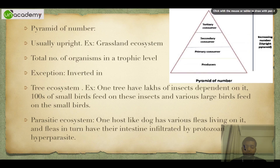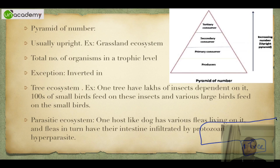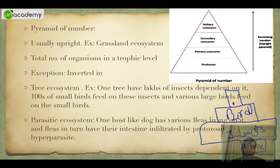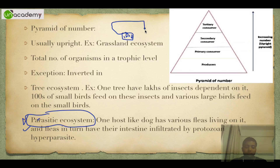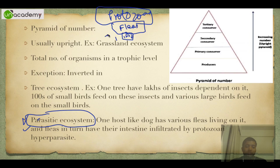There are two exceptions where the pyramid is inverted. First is a tree ecosystem: one tree, then lakhs of insects dependent on it, then various birds feeding on them — this creates a mixed, not quite inverted but not upright pyramid. In a parasitic ecosystem it is 100 percent inverted: one dog with thousands of fleas on it, and millions of protozoans on the fleas — T1, T2, T3 — a typical example of an inverted pyramid of numbers.